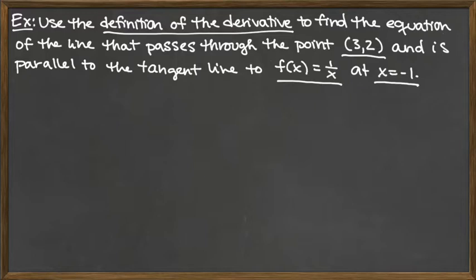Another key word here that I want to make sure we point out is parallel. We're not actually looking for the equation of the tangent line. We're looking for an equation of a line that goes through a point, but the key is we need to find the slope of the tangent line because a parallel line would have the same slope.